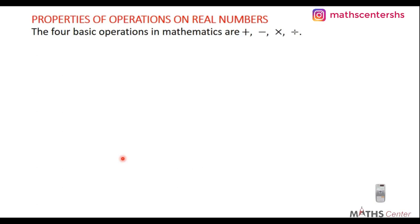Now let's look at the properties of operations on real numbers. There are 4 basic operations in mathematics: addition, subtraction, multiplication, and division. These are called binary operations because they combine two numbers to give a result.